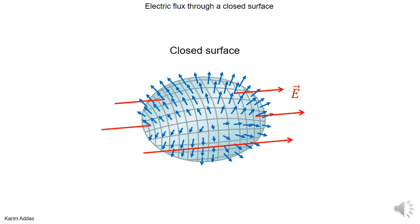Let's look at a problem where you have an electric field. Remember, this surface is completely imaginary — it doesn't exist in reality. You're the one who creates this surface in your mind to solve a particular problem or to write down Gauss's law. It is not made of any material, it doesn't have any charge — it's just an abstract mathematical construction. So what if you put this abstract closed surface in a region where there's an electric field?